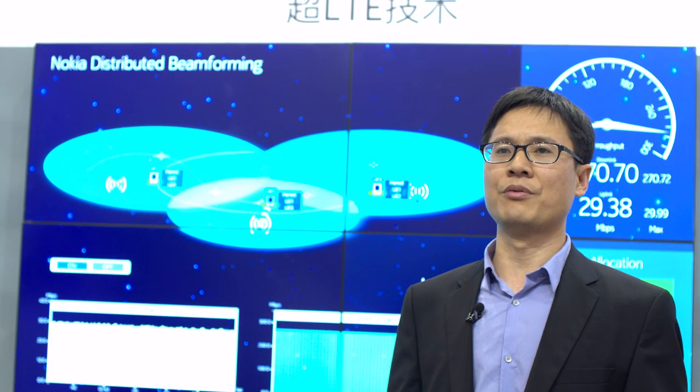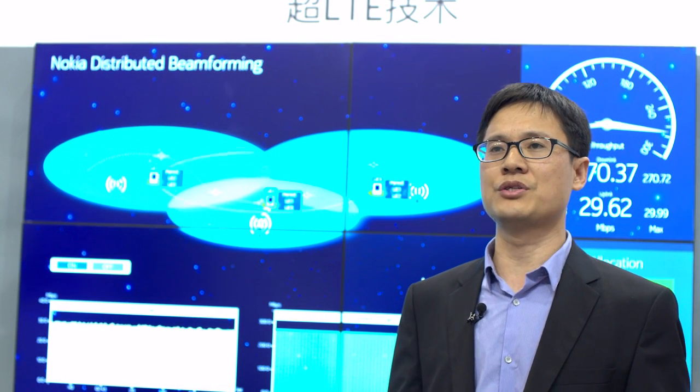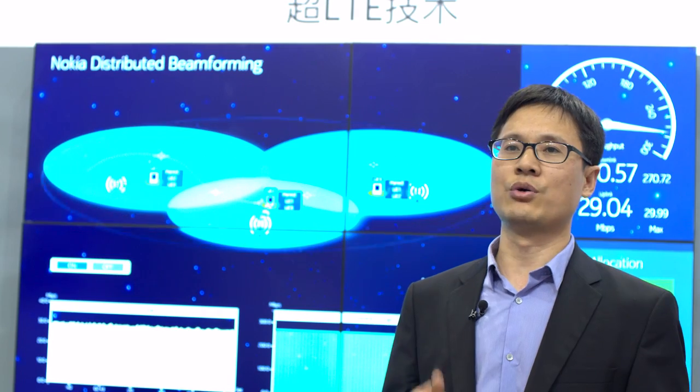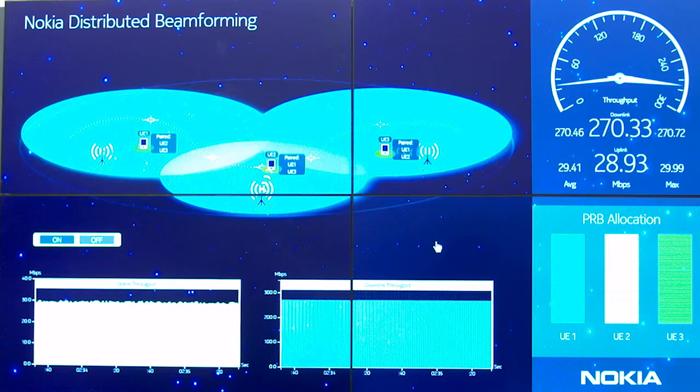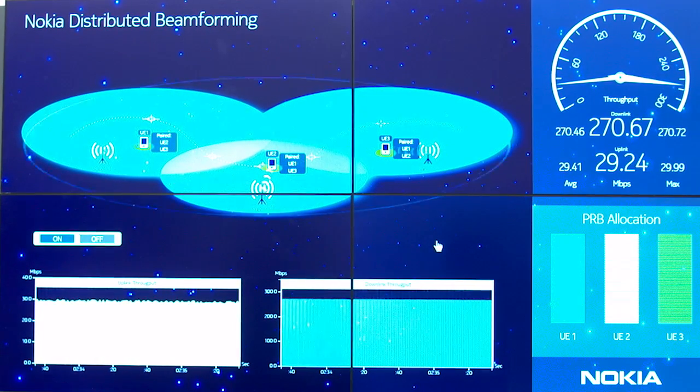Nokia distributed beamforming increases spectrum efficiency, increases capacity of Supercell by three times, and reuses existing deployment.